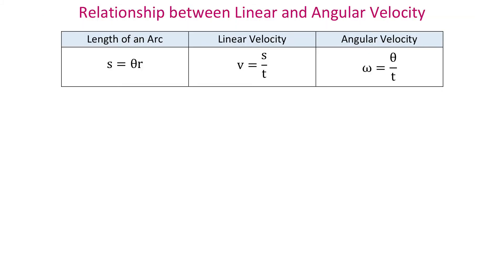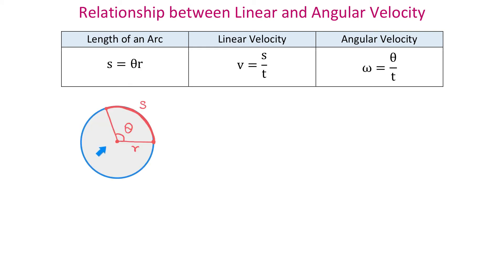Now let's see the relationship between linear and angular velocity. We will review the following formulas. The first is the arc length formula: s equals theta times r, where the length of an arc equals the angle theta in radians multiplied by the radius. The second is linear velocity: v equals s divided by t. And the third is angular velocity: omega equals theta divided by t.